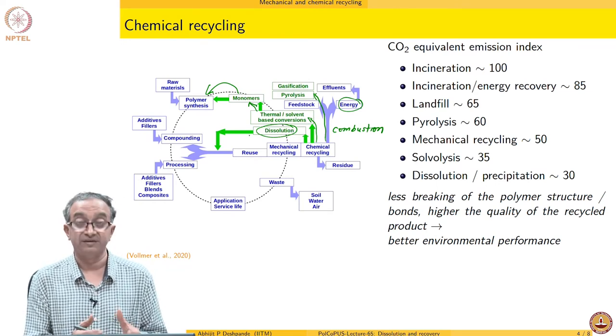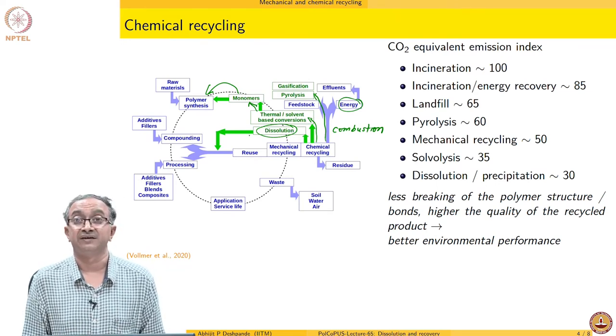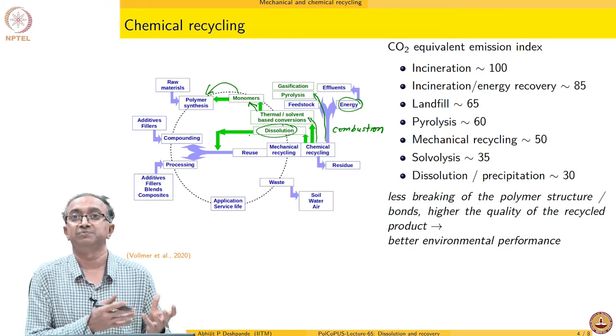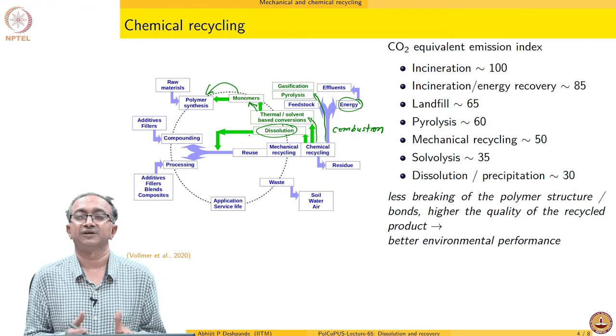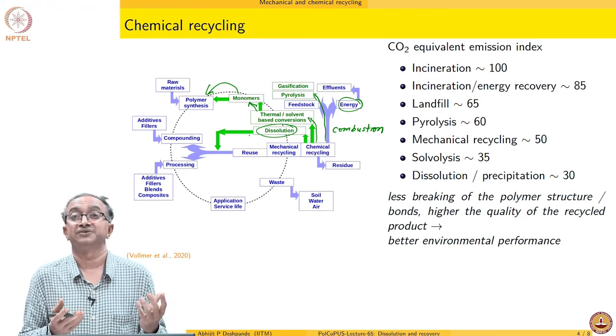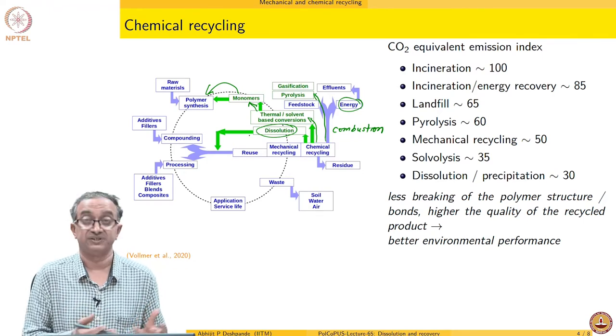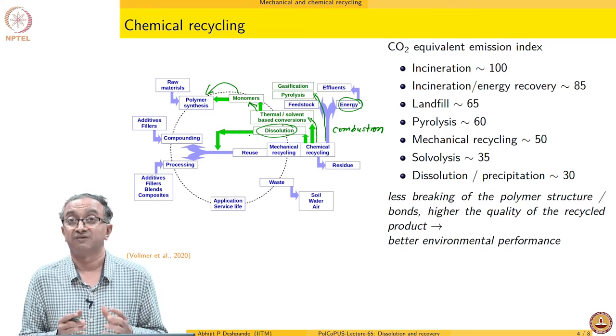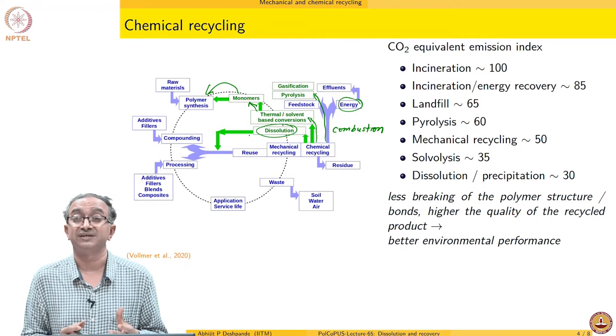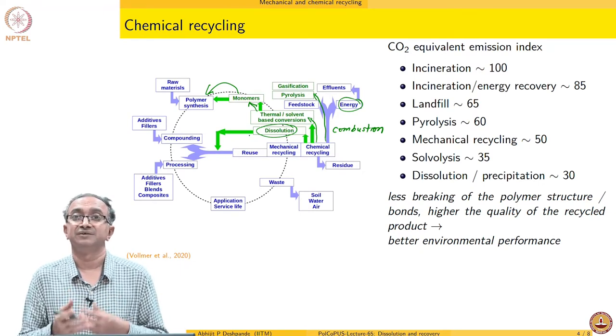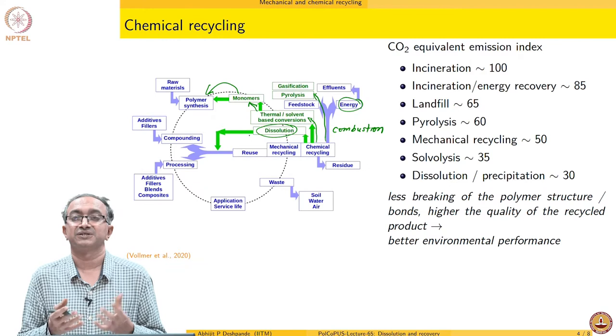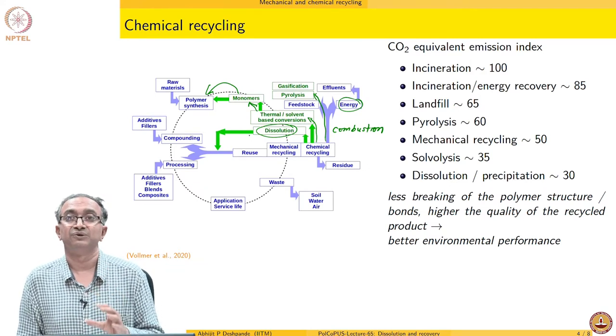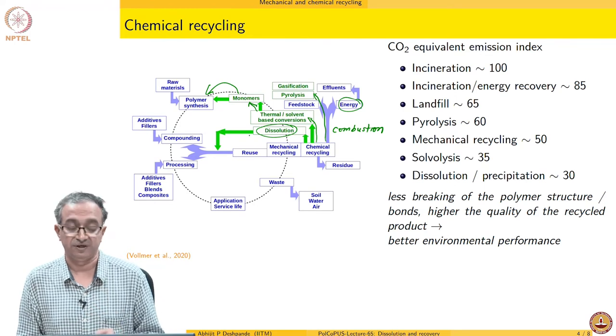One other important way of chemical recycling is by dissolution. Can we not take the plastic waste material and devise a strategy of dissolution and then re-precipitation, so that we can get the polymer back and then we can again compound it, process it and reuse it as a product. The advantage of this dissolution is that the physical and chemical changes, the chain scission and all of those processes can be minimized.